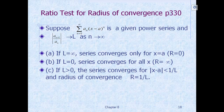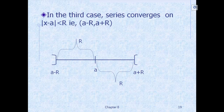If L equals 0, then the series converges for all x, and the radius of convergence is infinity. If L is greater than 0, then the series converges for |x - a| less than 1/L, and the radius of convergence is 1/L. In terms of a picture, if a is the center and r is the radius of convergence, then the series converges on the interval from a - r to a + r.